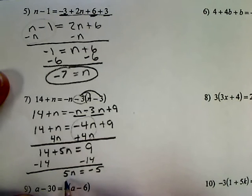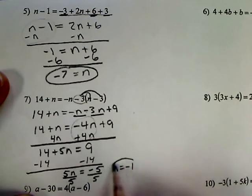5 times n, the opposite of multiply is divide. So n equals negative 1.